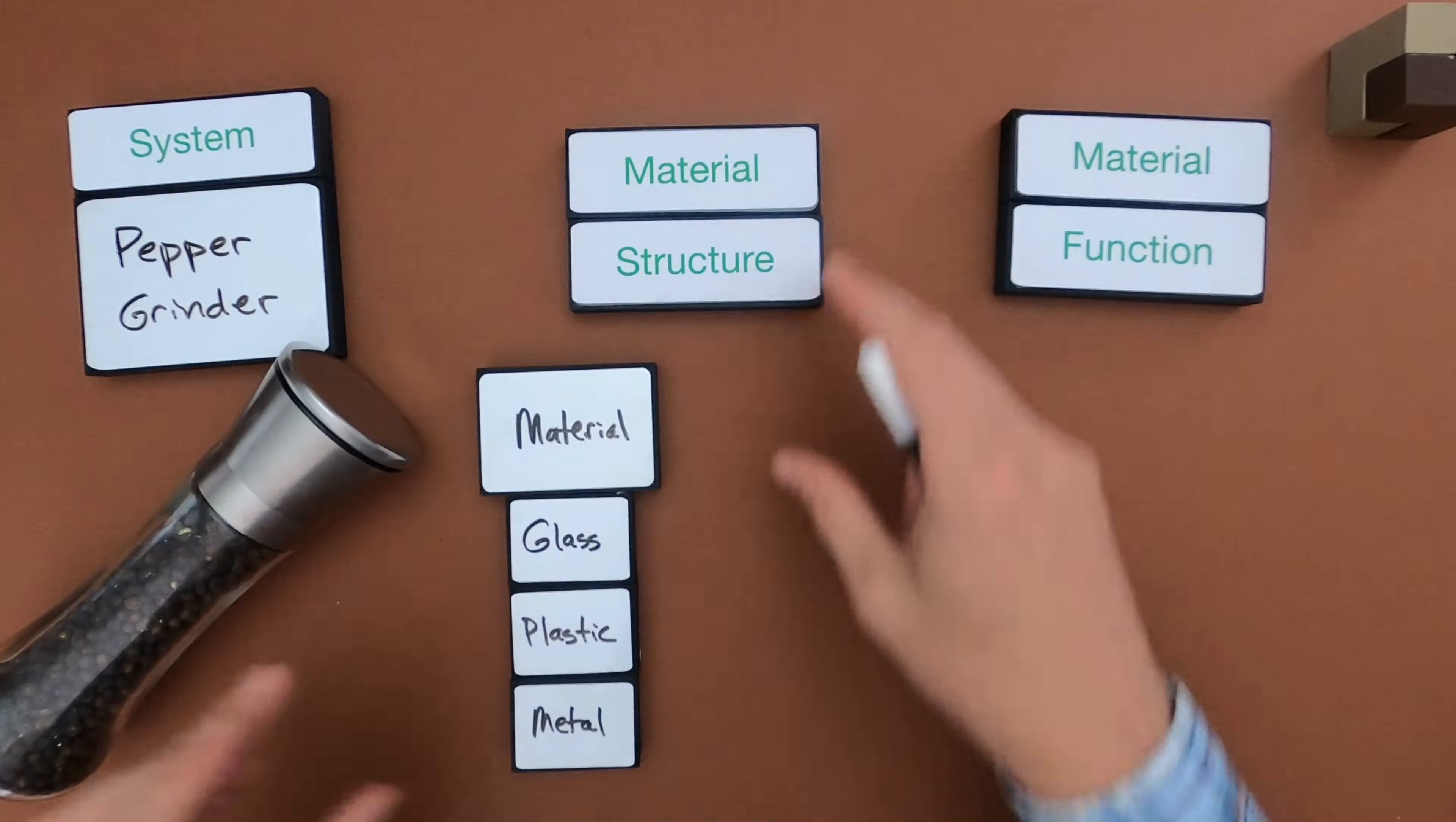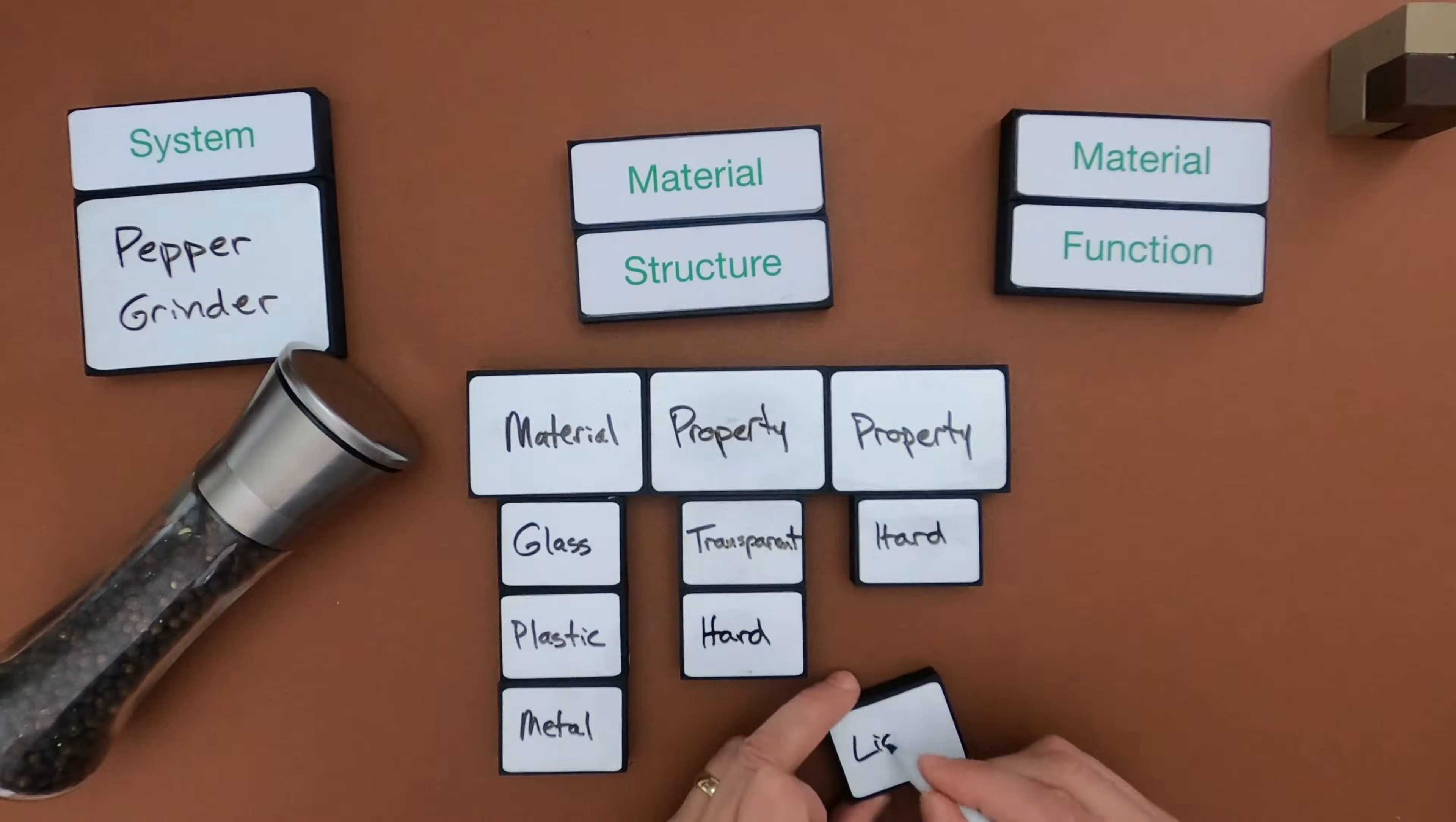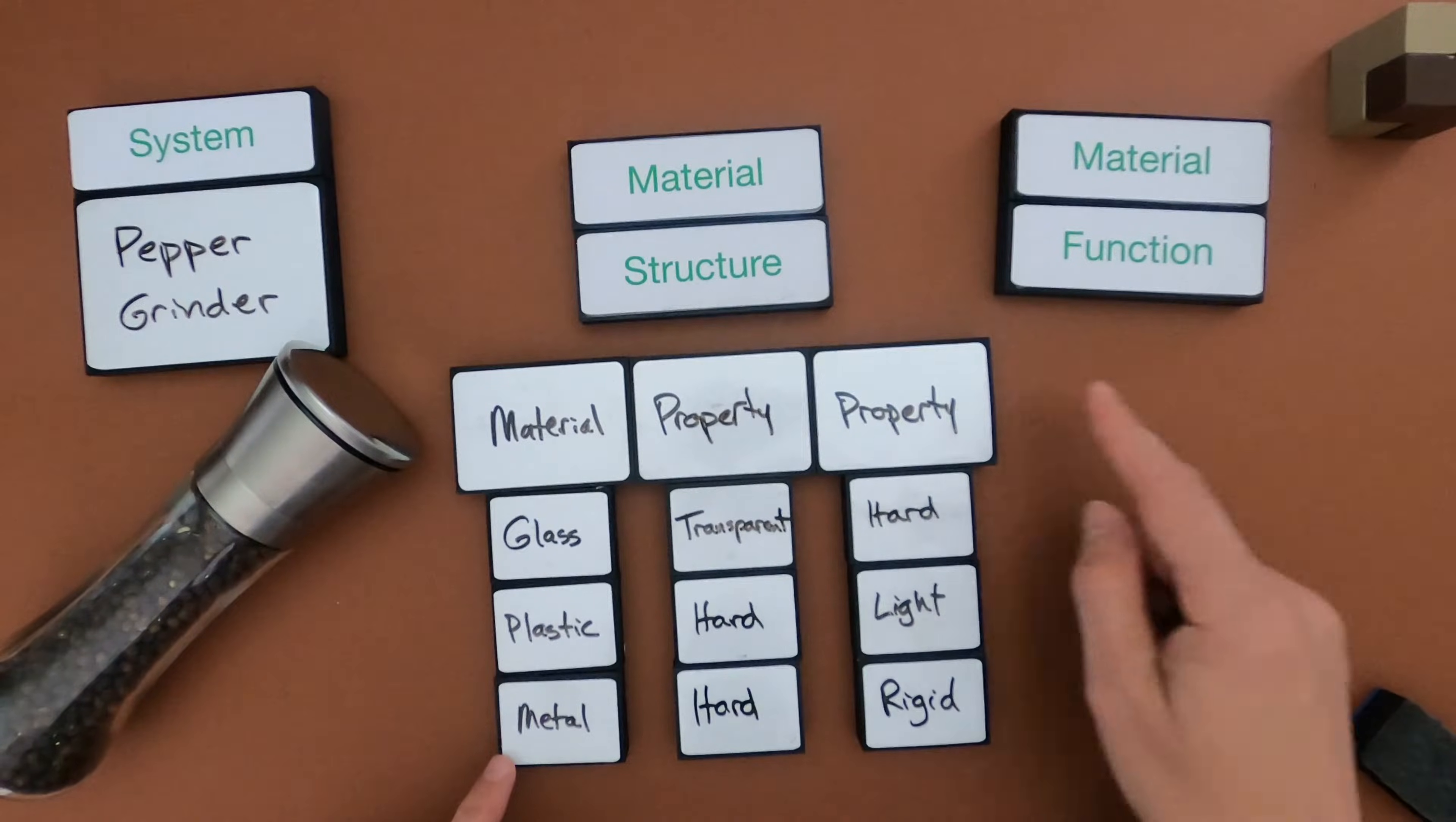Okay so the first thing that I would do is, after I've identified the material, is I want to list out the different properties from these materials. So let me do that. Alrighty, some important properties I think. The glass being transparent is an important property and also being hard. The plastic being hard and light, and maybe even cheap, and the metal being hard and rigid, are important properties.